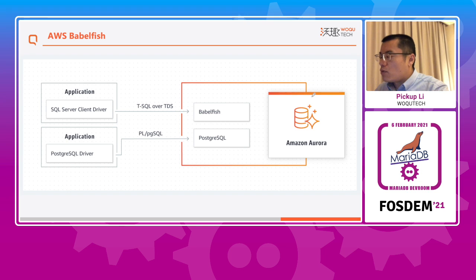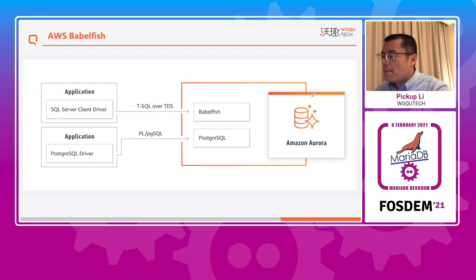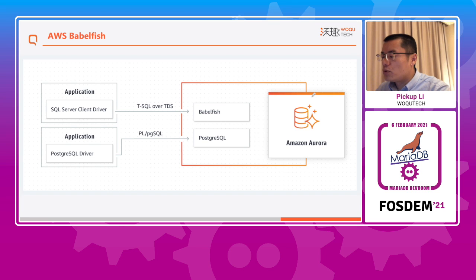We are very glad to see that AWS, the industry leader in cloud, has recently launched an Oracle-compatible version called Babelfish based on PostgreSQL. This indicates that it is not only our company that is working on making open-source databases compatible with commercial databases. We also hope that more and more companies will join in and communicate with each other to promote the development of the open-source community.